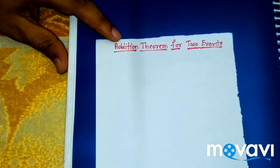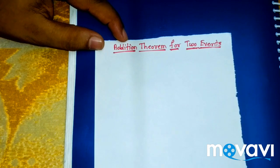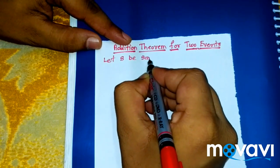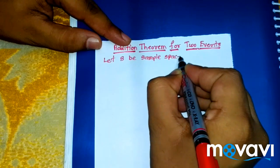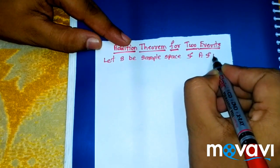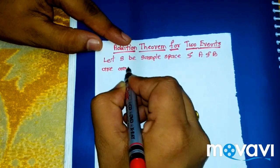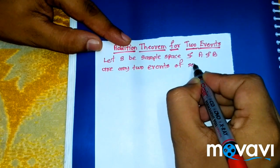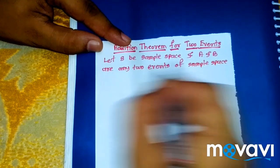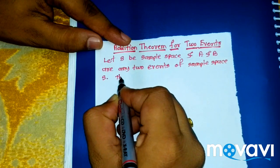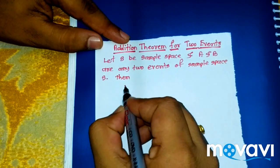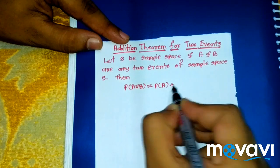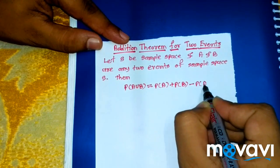Hello friends, today we discuss the addition theorem for two events. Let S be a sample space and A and B are any two events of sample space S. Then this theorem says that probability of A union B is equal to probability of A plus probability of B minus probability of A intersection B.